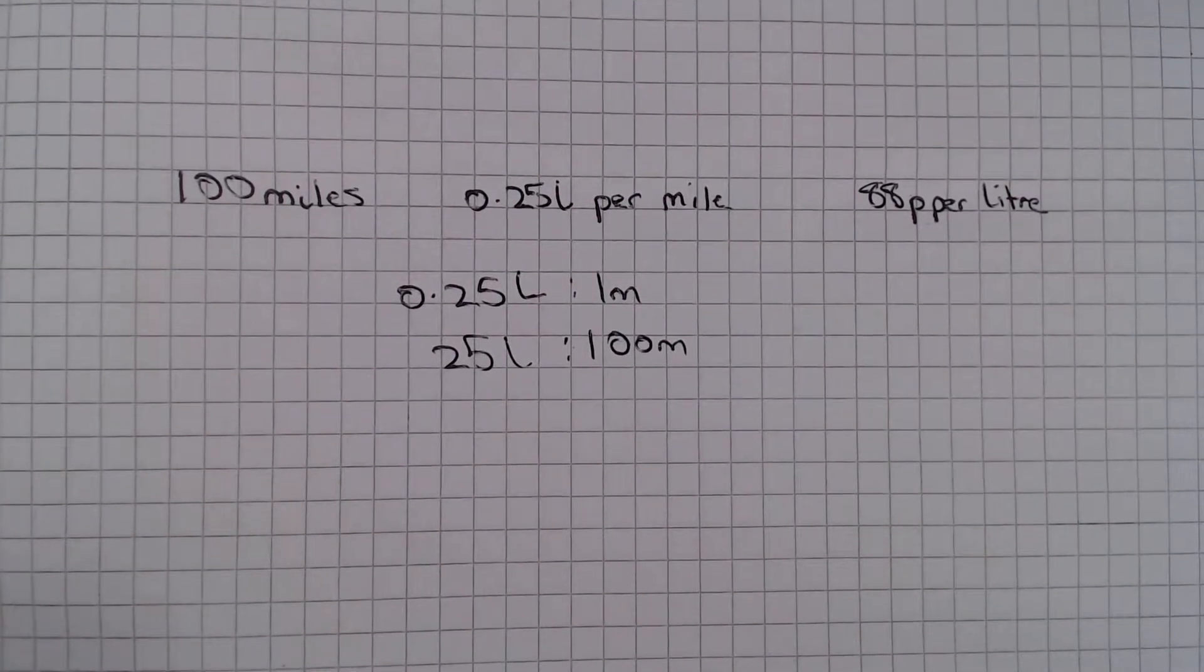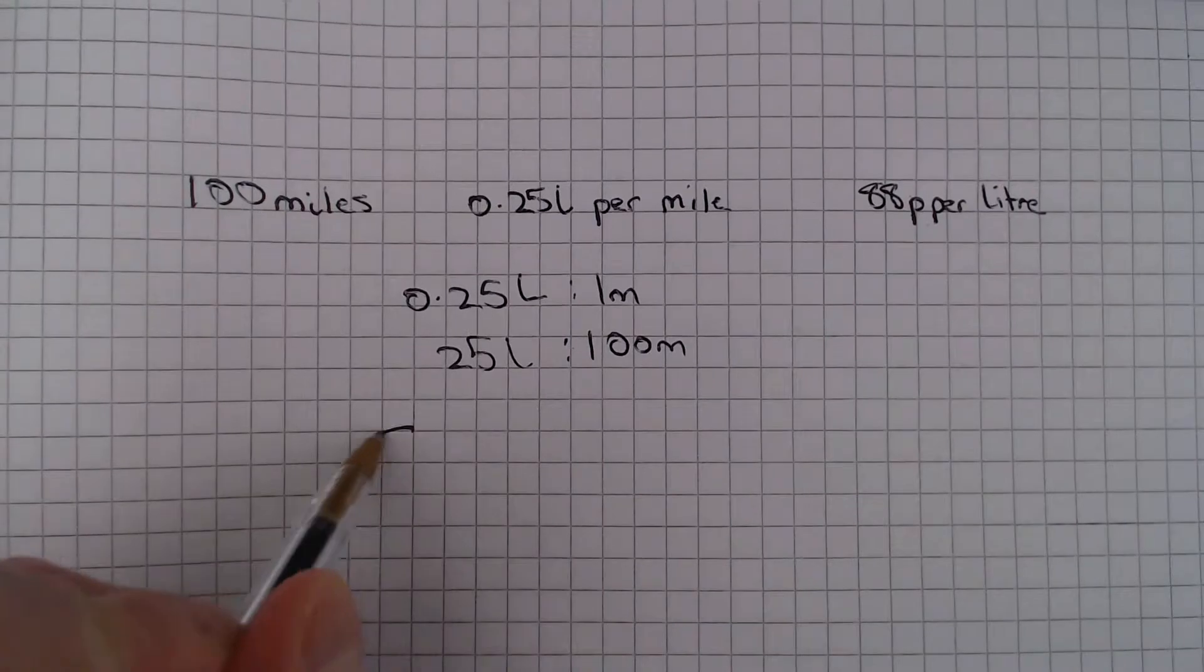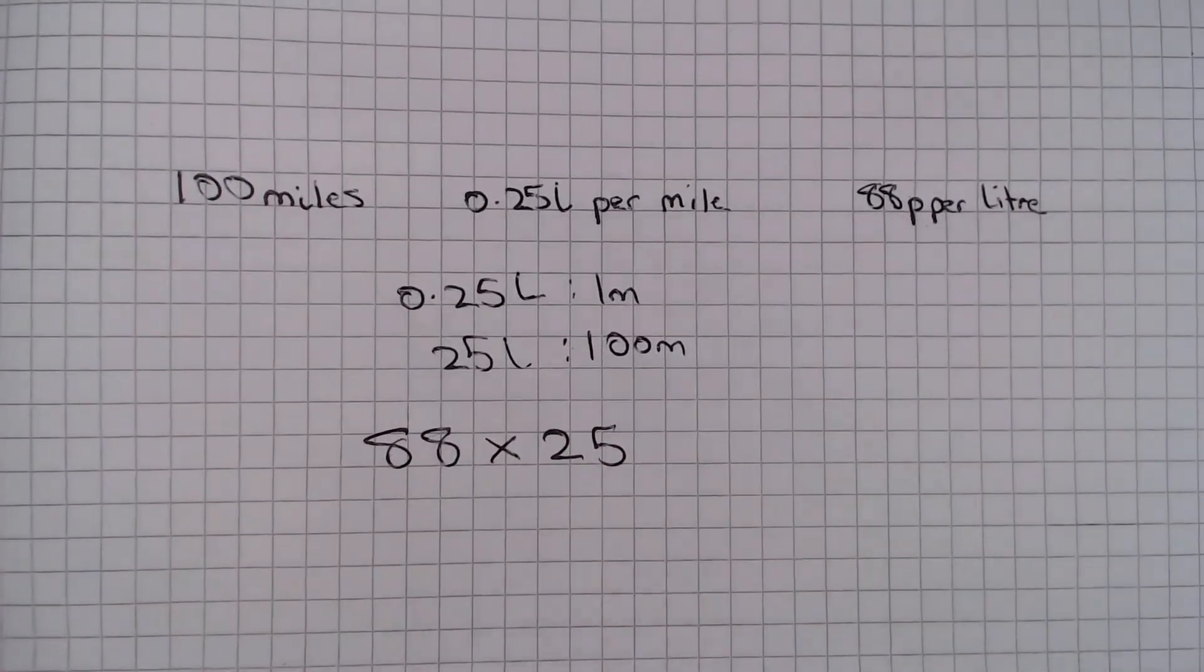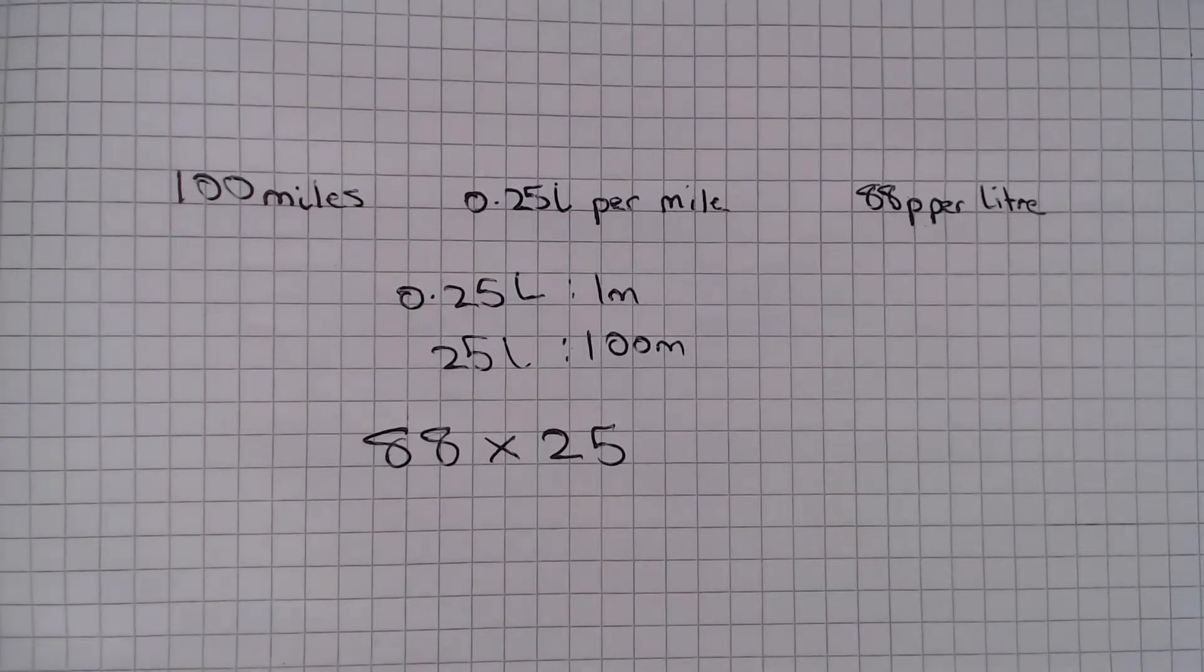And now we just need to work out the cost, so we are going to do 88 multiplied by 25. Now we could do this in a grid, but there is a quick way.